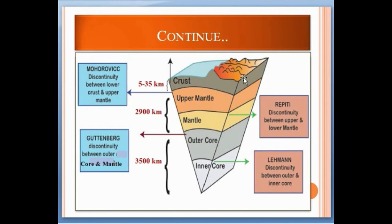The thickness of the crust is 5 to 35 kilometers. The mantle is divided into two parts: upper mantle and lower mantle. The total thickness of the mantle is 2900 kilometers. The core is also divided into two parts — outer core and inner core — and the total thickness of the core is 3500 kilometers.